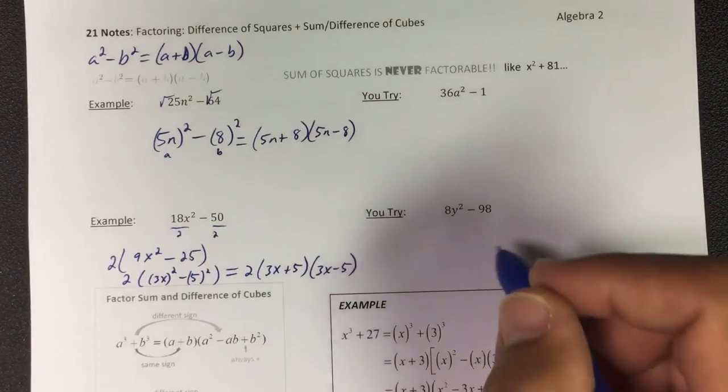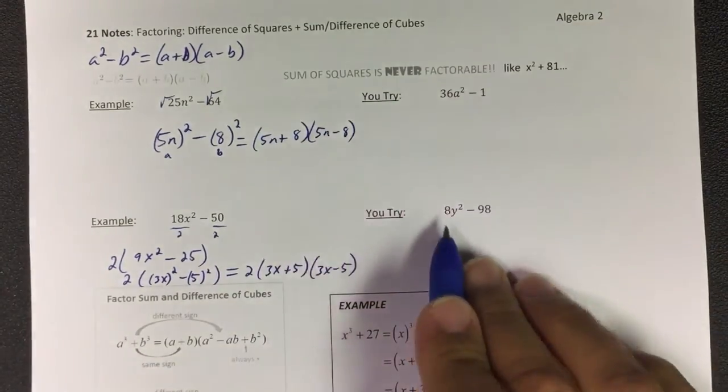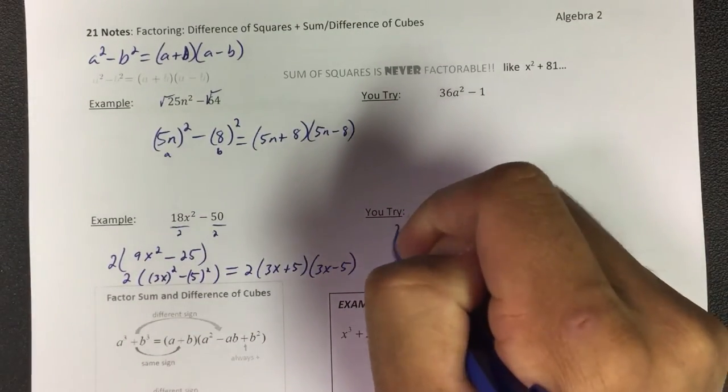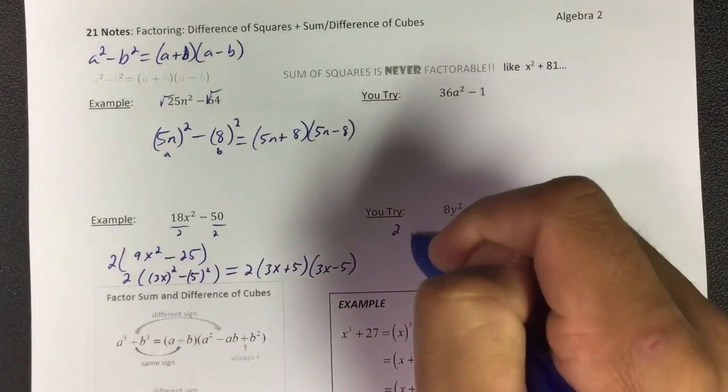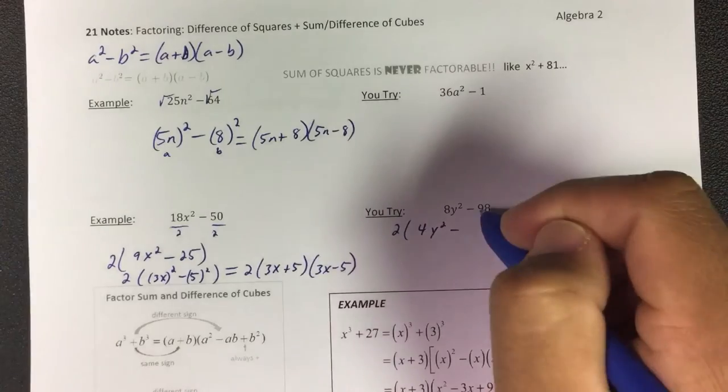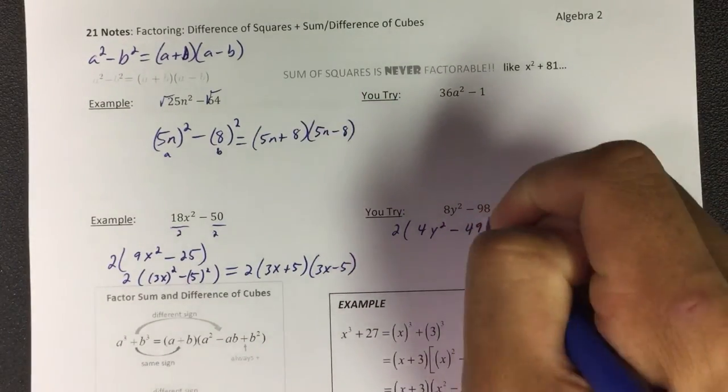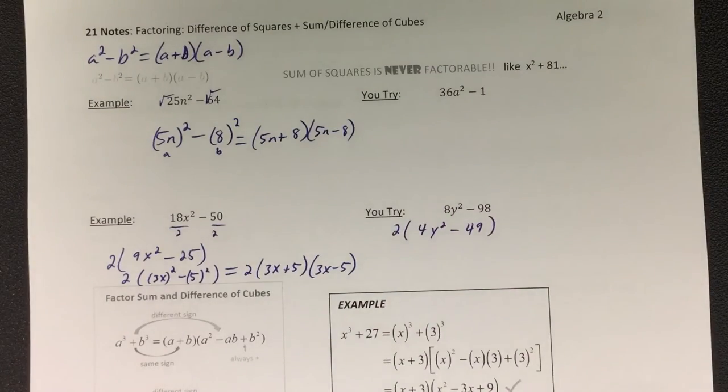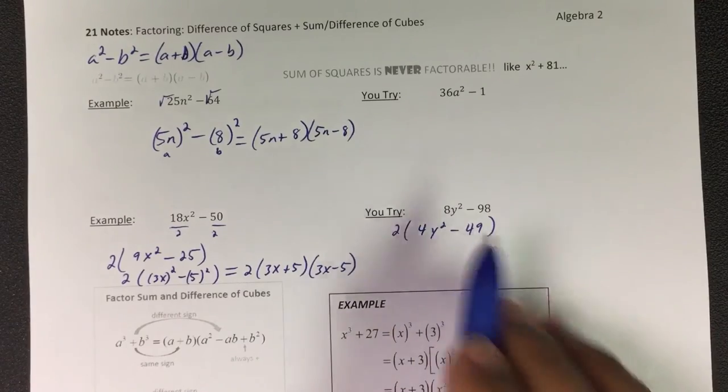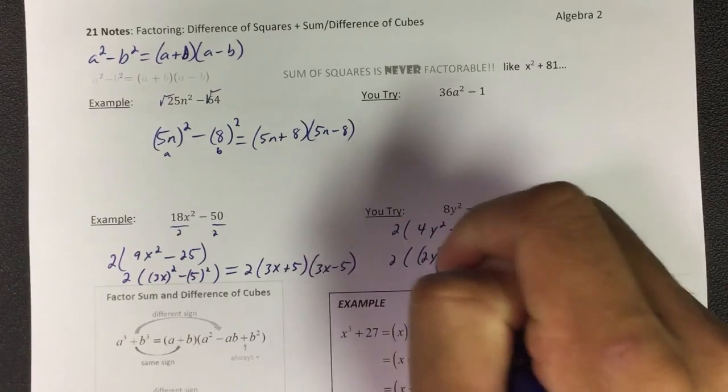I'll do this one right here because this one requires you to divide the two out. So if I take the two out, because I know there's no square root of 8, but I could take the two out, that goes in front, and now I have 4y² minus, what's 98 divided by 2? 49. These are what we would call perfect squares. That's 2², that's 7².